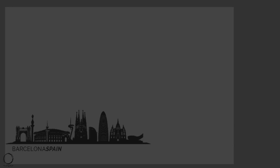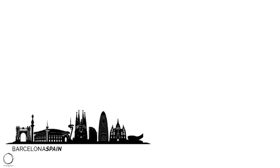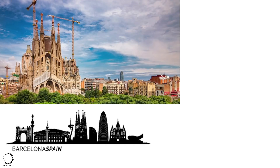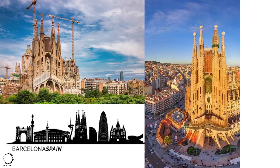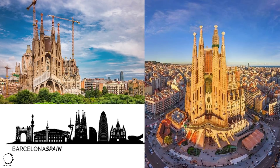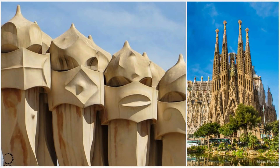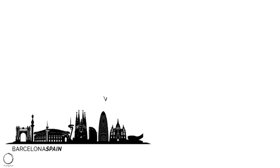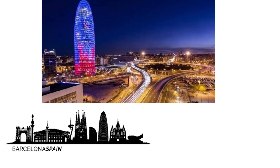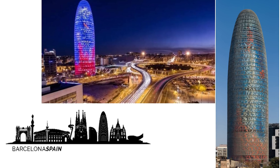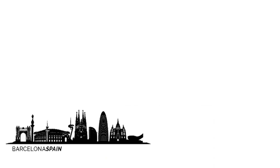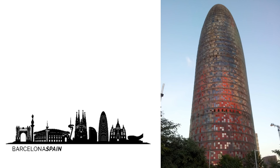Moving on to Barcelona, the cosmopolitan city of Spain known for its art and architecture. The highlight of the skyline is the fantastical Sagrada Família Church, a large unfinished Roman Catholic minor basilica designed by Spanish architect Antoni Gaudí, whose works on the building are part of a UNESCO World Heritage Site. Another notable structure is the Agbar Tower, a 38-storey skyscraper marking the gateway to the new technological district of Barcelona.